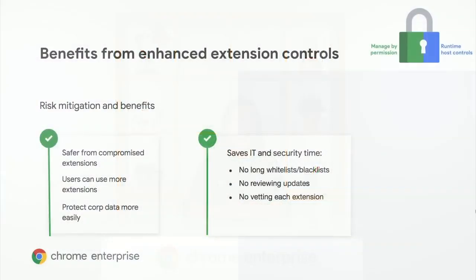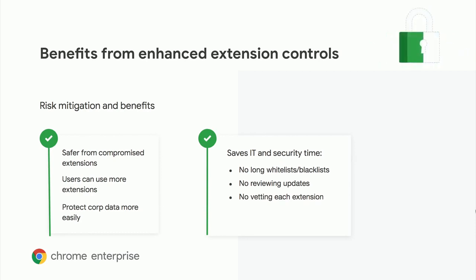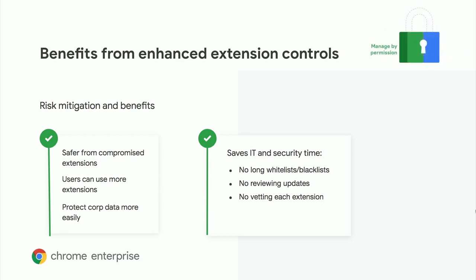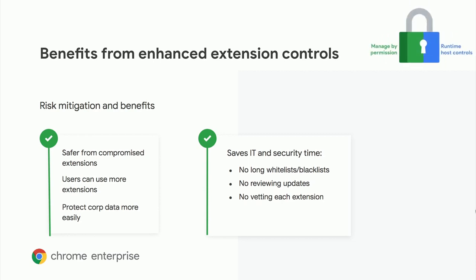Summarizing the benefits of managing extensions by permissions: enterprises are protected from extensions that change or are compromised after first being approved, reducing exposure to risk. At the same time, you have more confidence that you can make more extensions available to your users, providing a better user experience and increased productivity. Being able to protect your corp sites with a global setting protects you from all extensions versus having to protect against one extension at a time. The added benefits are time savings for both your IT and security teams, allowing them to focus on managing extensions that require exceptions and review changes only on an as-needed basis.